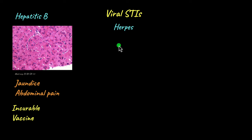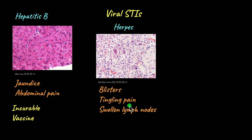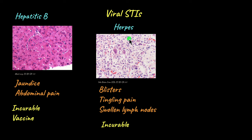Next is herpes, caused by the herpes simplex virus. Initially it presents symptoms like sores or blisters in genital areas, tingling pain, swollen lymph nodes, and mild fever. However, this infection can spread to other regions like the eyes, brain, and nervous system, where it becomes quite fatal. Like other viral STIs, there is no cure for herpes.